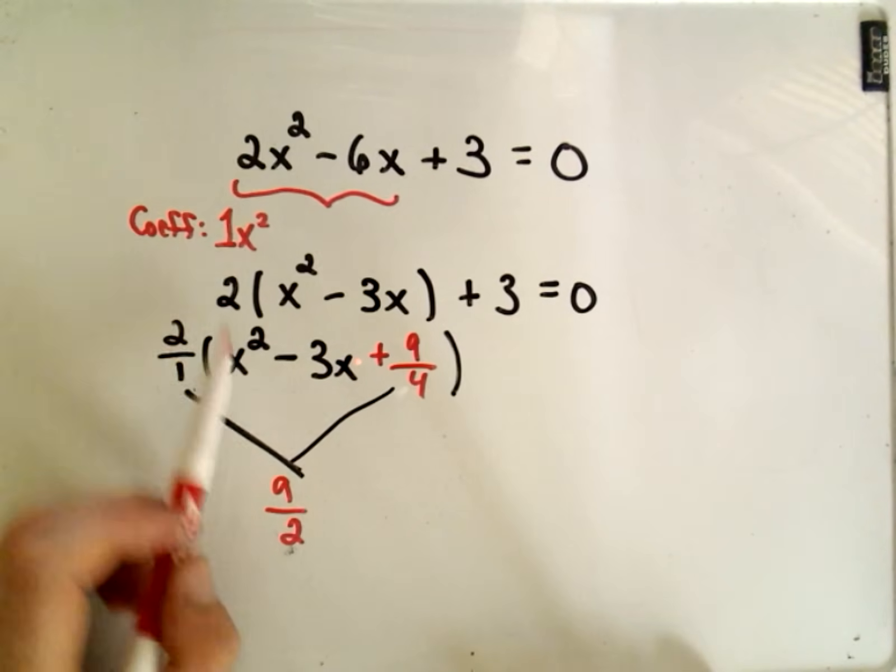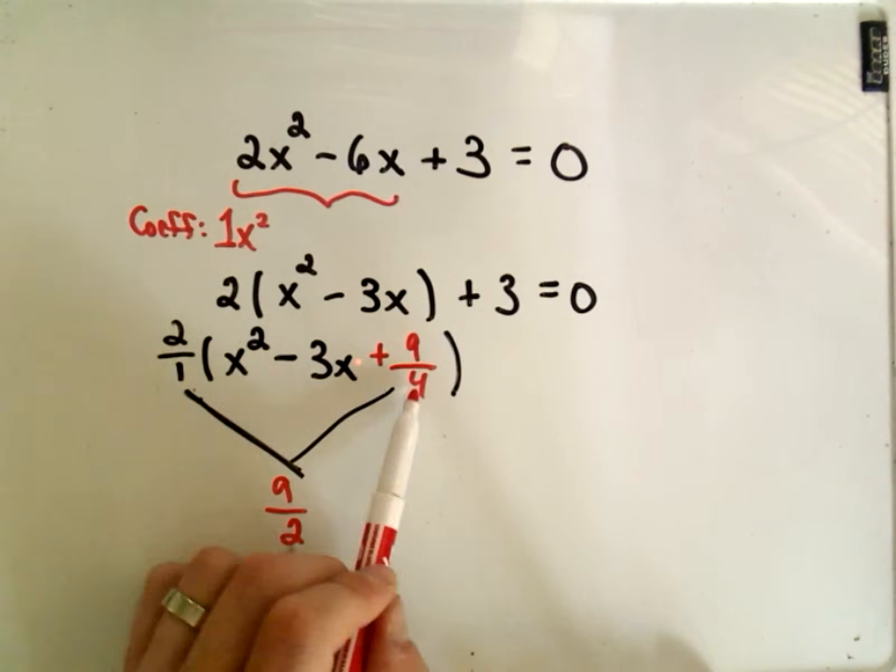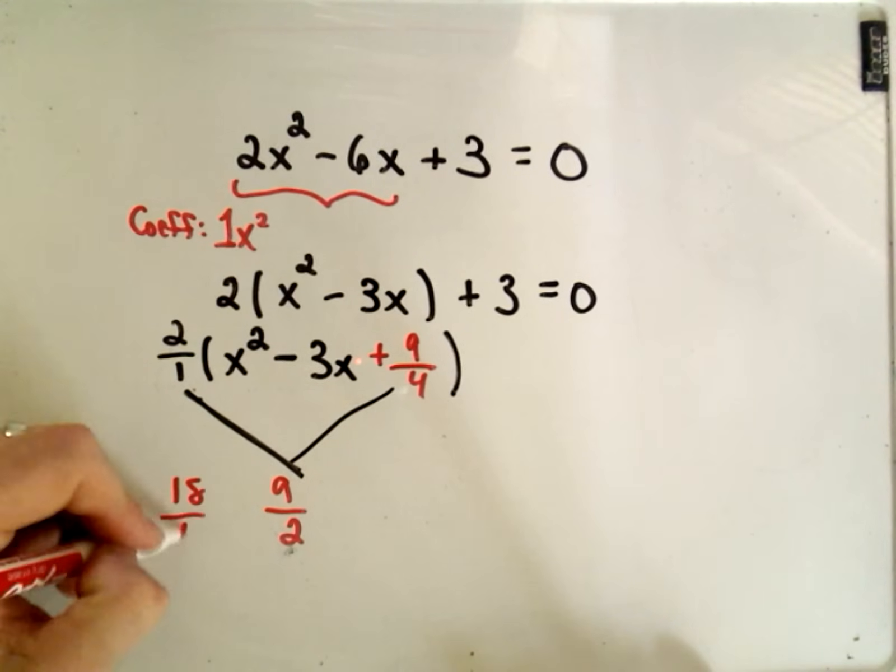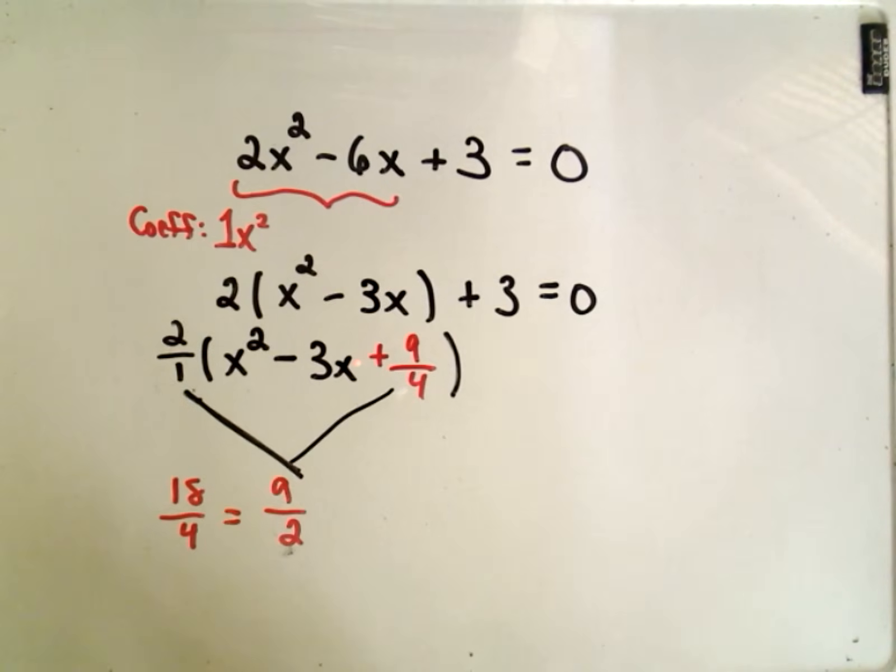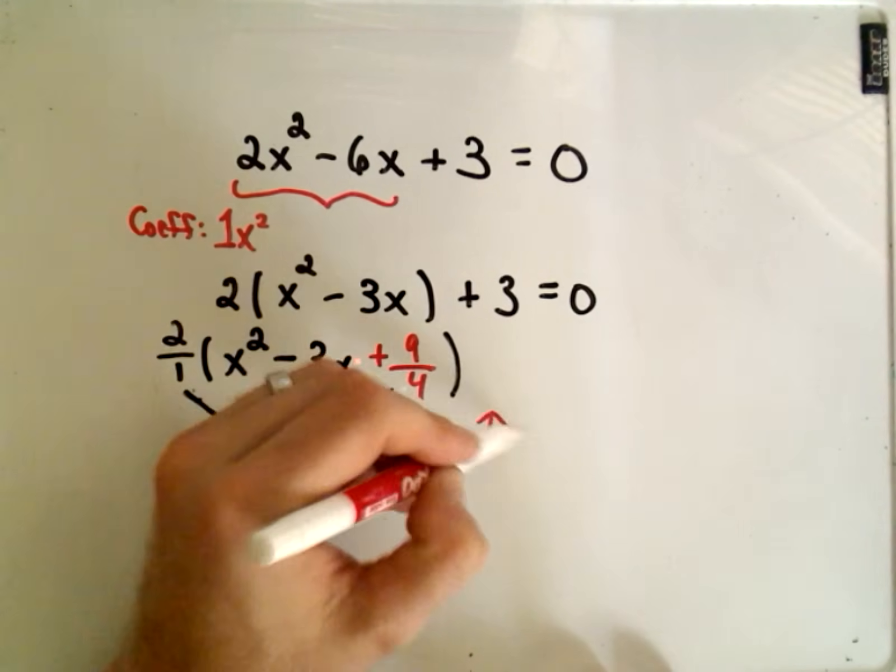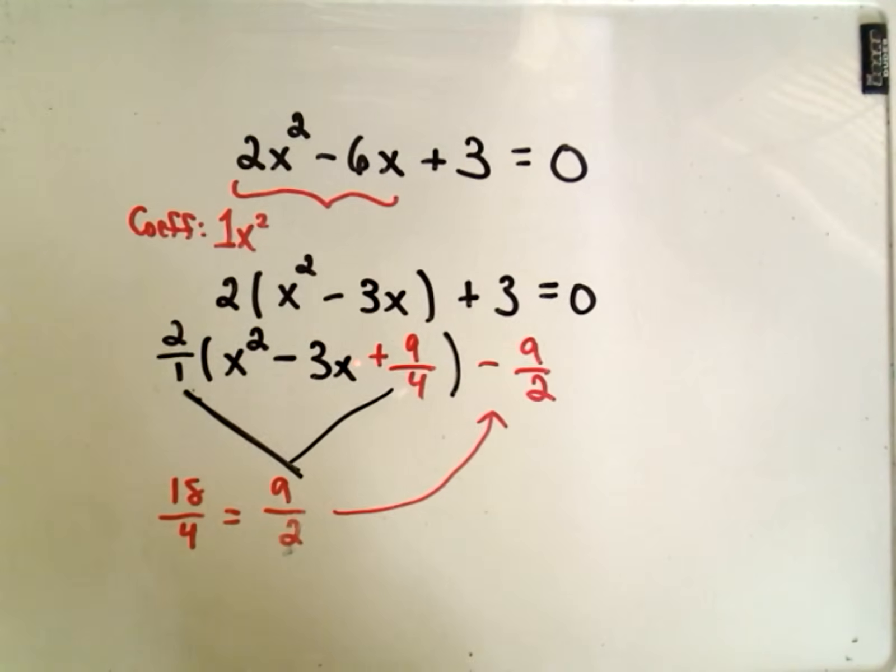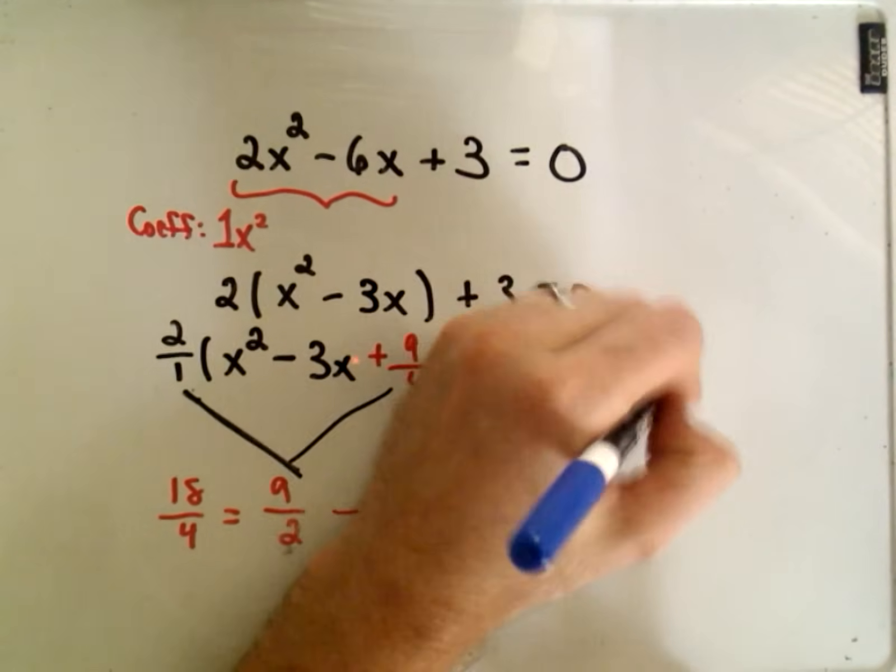So that would be the number that's actually not in there from the original part. If I multiply, I'll get 2x squared minus 6x. I'll get a plus 9 halves that should not be there. And then my plus 3, which should be there. So to account for the extra 9 halves, even though we put 9 fourths, we're multiplying by 2, I actually have to subtract away 9 halves.